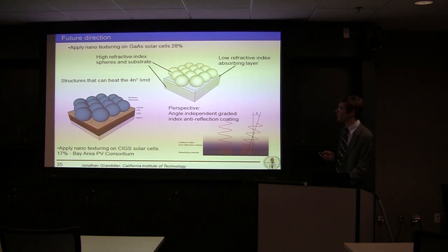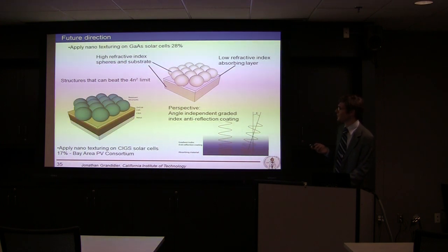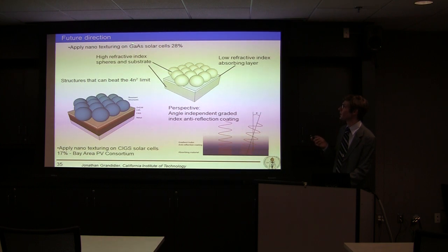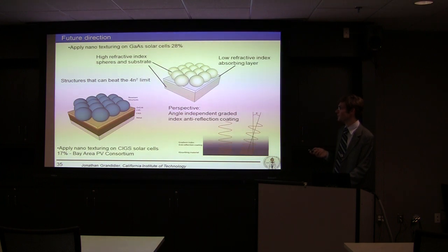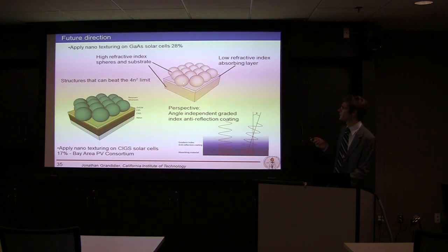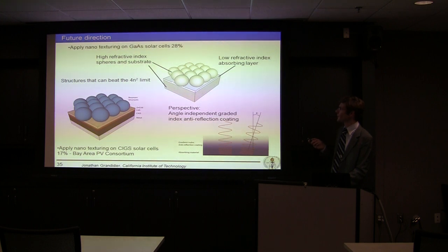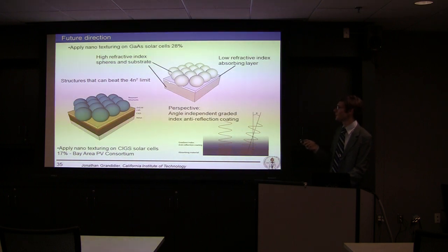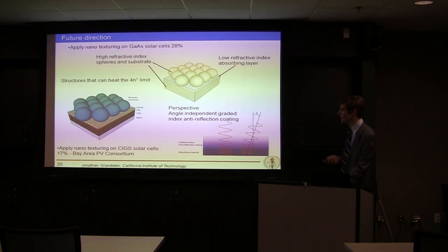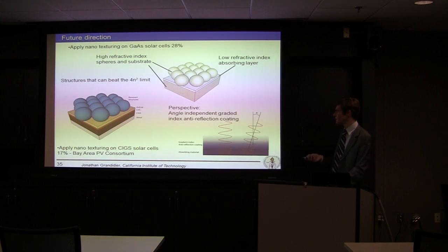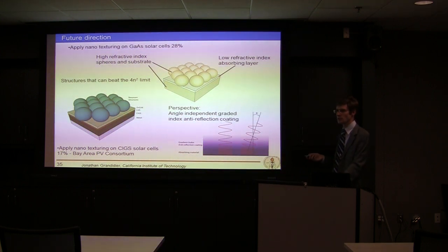Some future directions we would like to take using this method: one is to apply this technique on the gallium arsenide solar cell, which is very efficient, or on the CIGS solar cell. Another approach could be to use a very high refractive index substrate with a low index active layer to significantly increase the density of states in the active material. Also, another perspective is to consider these spheres as a graded index anti-reflection coating and to see how they can be beneficial in that way.